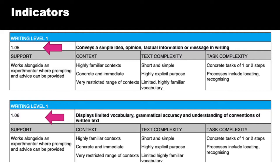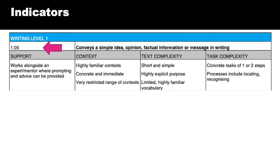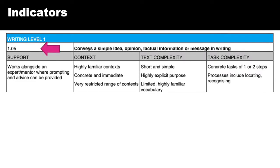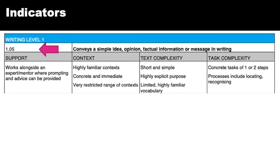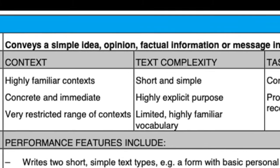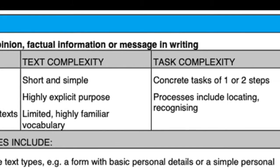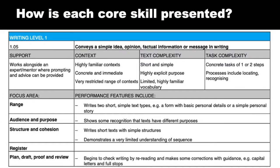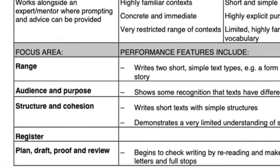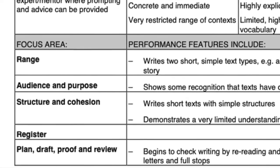The layout of writing level one, first indicator, is: conveys a simple idea, opinion, factual information or message in writing. Underneath is the relevant line from the performance variables grid describing the appropriate support, context, text and task for level one. The focus areas for writing across all levels are: range, audience and purpose, structure and cohesion, register, and plan, draft, proof and review.